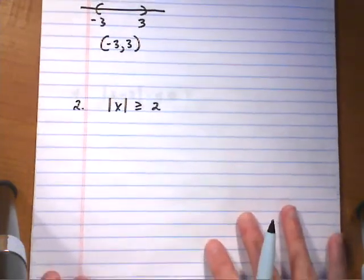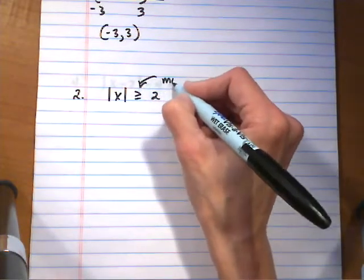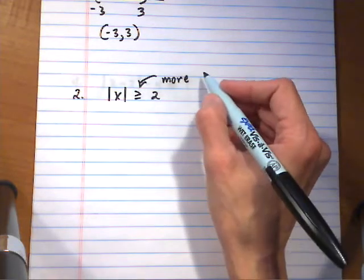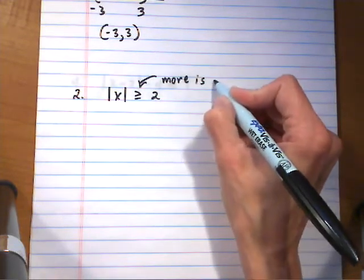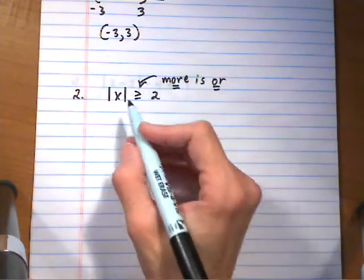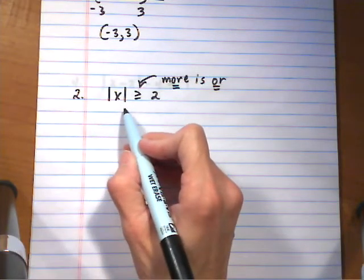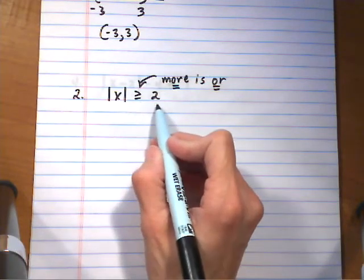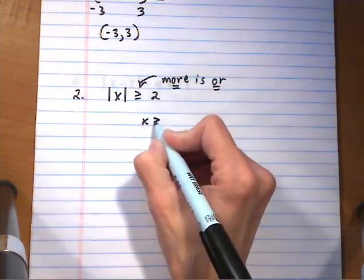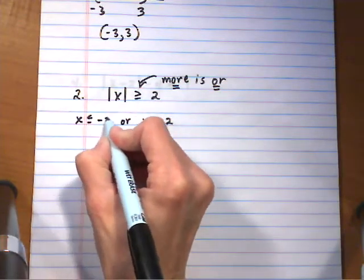Number 2 has a greater than, which means we have more, so it's going to be an or. It's going to graph out like an either/or going in two different directions. If the distance from 0 is greater than or equal to 2, that must mean that either x is greater than or equal to 2 or it's less than or equal to negative 2.